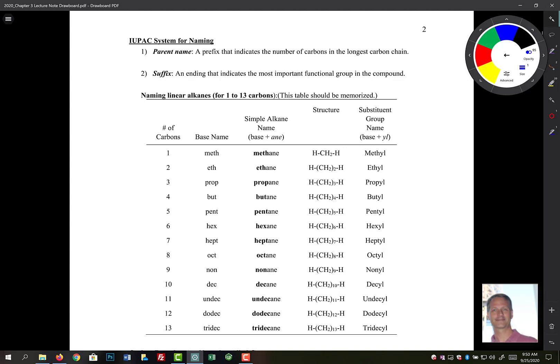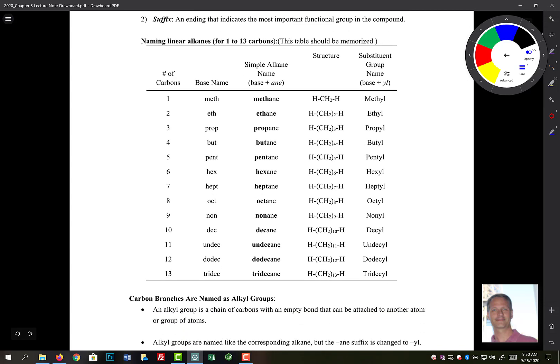For now, we're going to learn how to name just alkanes. So they're all going to have the ending of A and E. So there's a table here, and you really have to have this memorized. We're going to use it so much that it's just going to become common language for you, really.